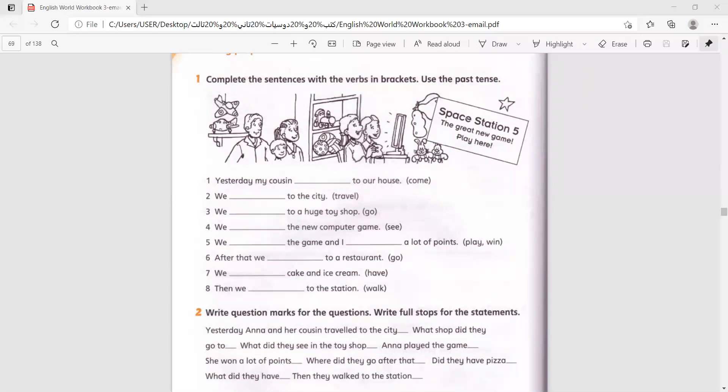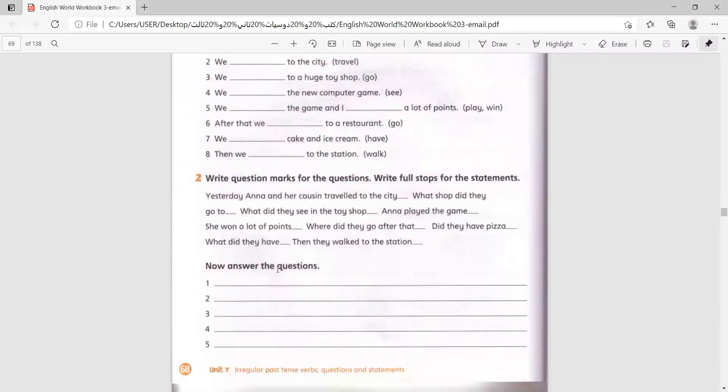Now, let's answer the last question on this page. Answer the questions. Okay, so look. In this paragraph, we have many questions, right? We will answer them. Let's go. Number one. What shop did they go to? Where did they go? To the toy shop. What did they see in the toy shop? They saw the computer game.